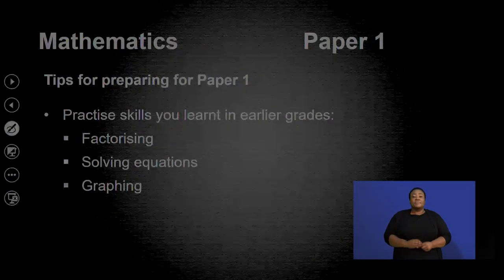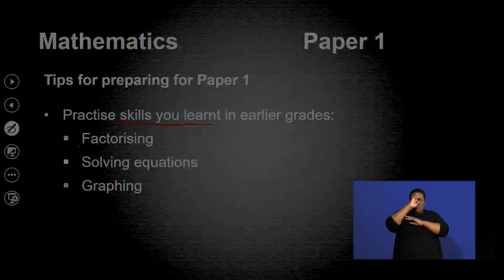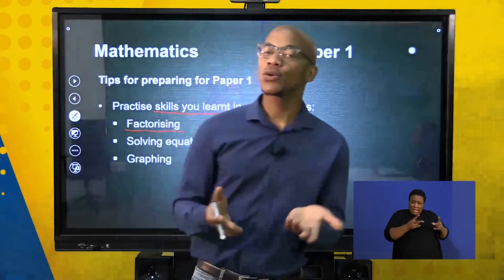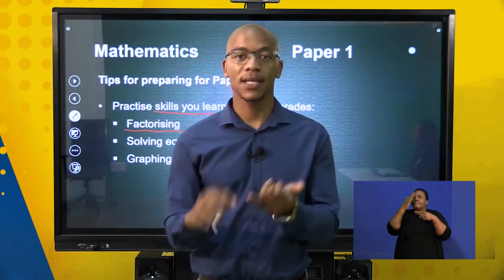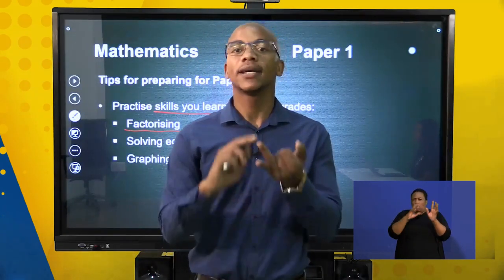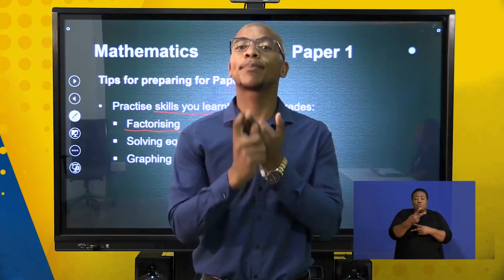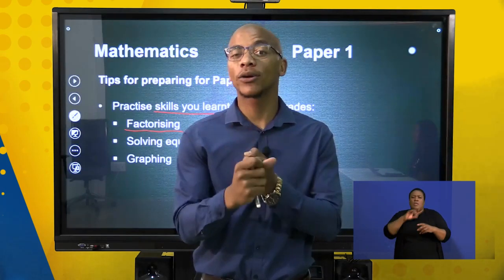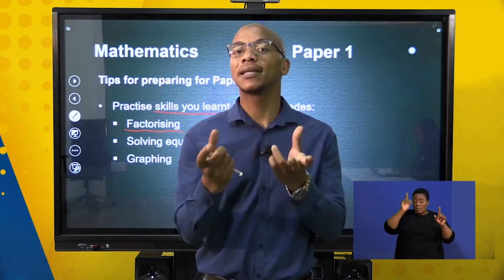The very first tip is you need to practice the skills that you have learned in the earlier grades. The first skill is factorizing. When you talk about factorizing, we have different types: difference of two squares, factorizing a trinomial, factorizing by grouping, and lastly factorizing by taking out a common factor. You need to know the differences between these things.